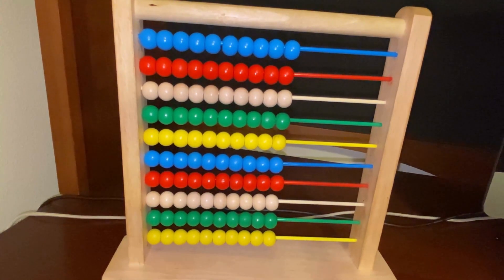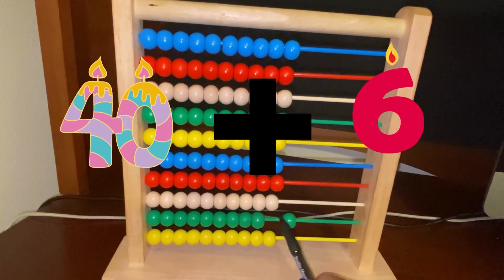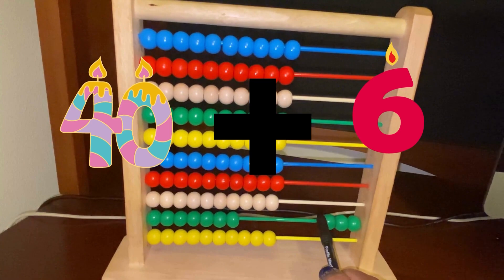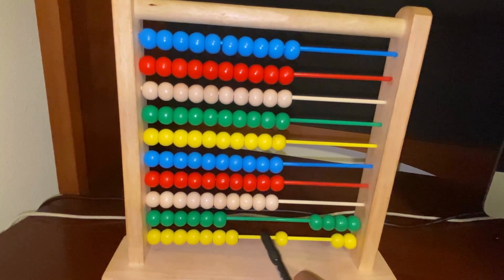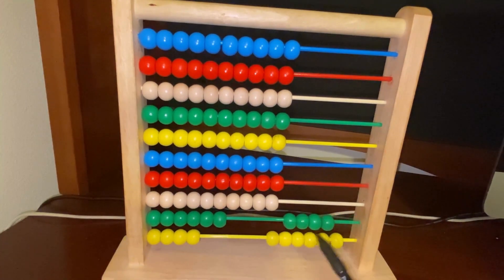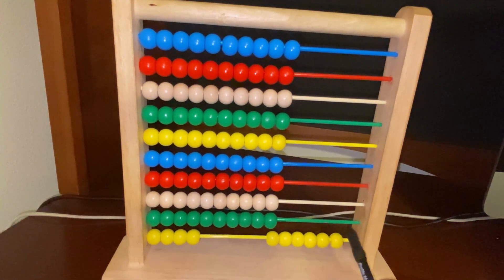So let's say we want to know what can we do 40 plus six? Let's count 10, 20, 30, 40. 40. We want 40 plus six. One, two, three, four, five, six. All right. So we have 40 plus six equals 46. 40 plus six equals 46. That is fantastic.